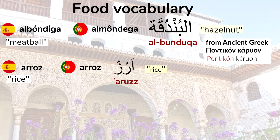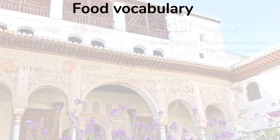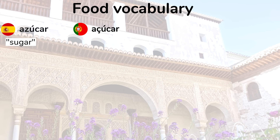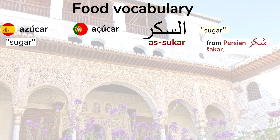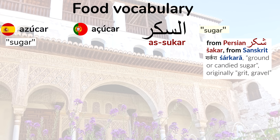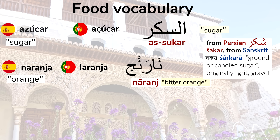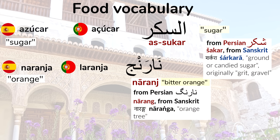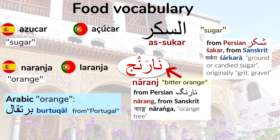Meaning 'rice' — this word came from the Arabic word, which ultimately entered Arabic from ancient Greek. Just as some of these Arabic words ultimately came from ancient Greek, some of them ultimately came from Persian or Sanskrit. Meaning 'sugar' — from the Arabic word 'as-sukkar.' The Arabic word came from the Persian word 'shakar,' and the Persian word came from the Sanskrit word 'sharkara,' meaning ground or candied sugar, originally meaning grit or gravel.